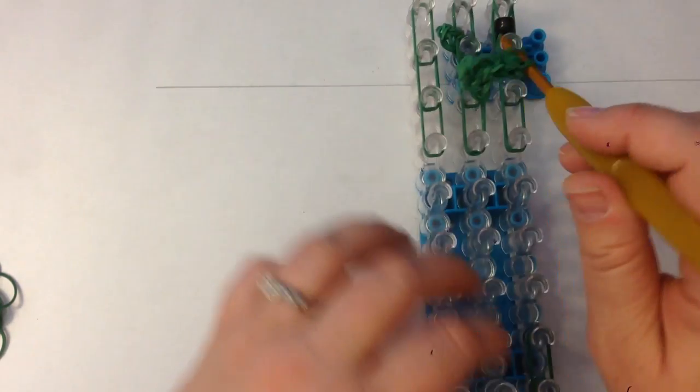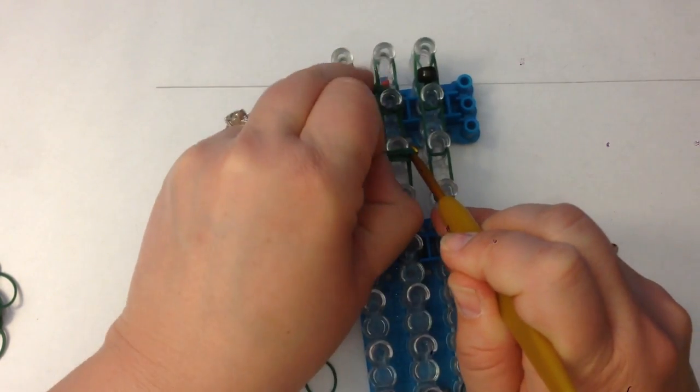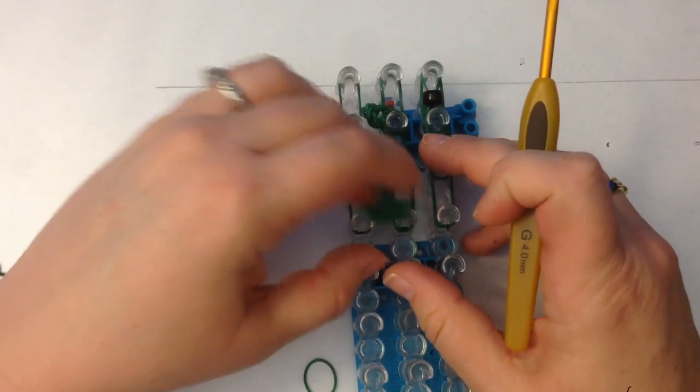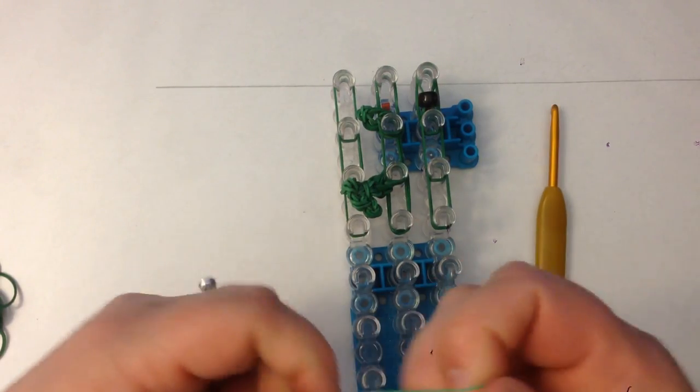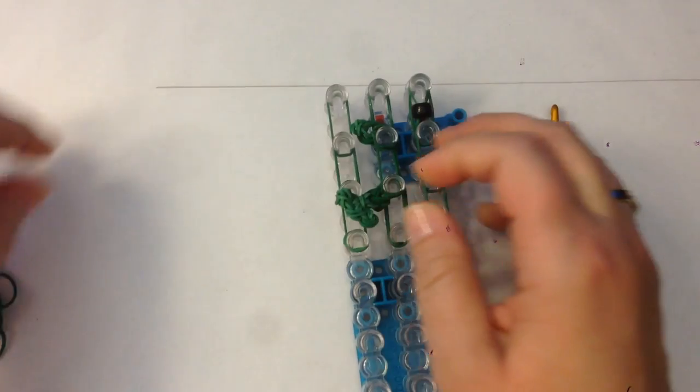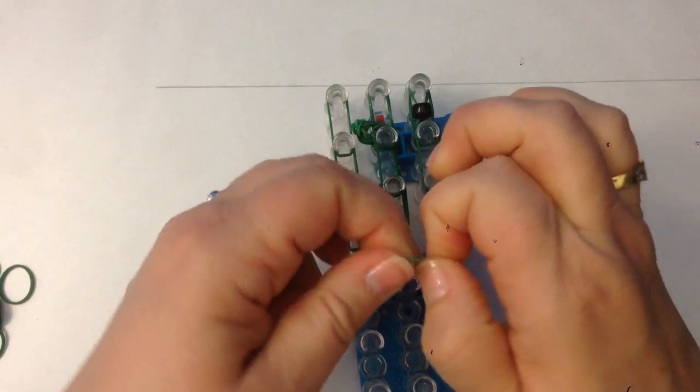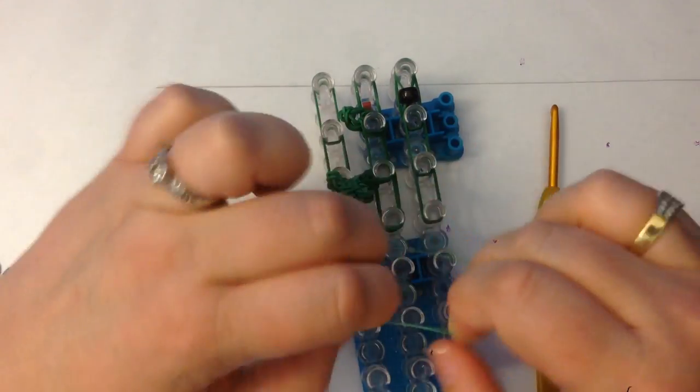Now this is going to go on his leg here. Just like that. We need end caps on all of these. So take a single band and wrap it three times around your fingers. Single band, wrap it three times. Single band, wrap it three times.